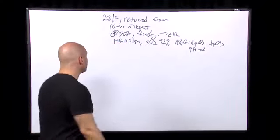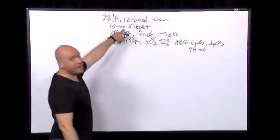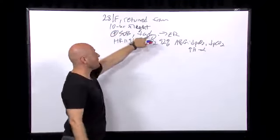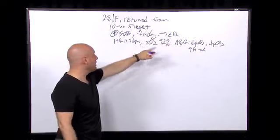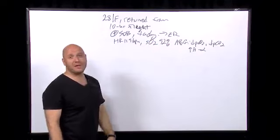What's going on here guys? She's got a 10 hour flight from Greece, right, shorter breath, tachycardic, tachypneic, hypoxic with a high AA gradient.